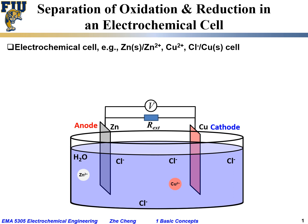Earlier, we said one important characteristic or feature for electrochemical reaction is the separation of the oxidation and the reduction half-cell reaction. Specifically, the geometric separation — a separation by certain geometric distance between where the oxidation half-cell reaction is occurring from where the reduction half-cell reaction is occurring.